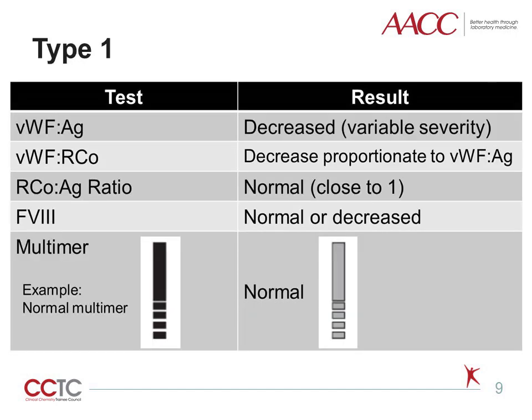Type 1 von Willebrand disease is the most common subtype, accounting for approximately 80% of the cases, and is characterized by a partial quantitative deficiency of von Willebrand factor. The bleeding symptoms are often mild, but can also be moderate or severe due to the genetic and phenotypic heterogeneity of the disease. In type 1, there is decreased von Willebrand factor protein, as measured by von Willebrand factor antigen, and decreased activity, as measured by von Willebrand factor ristocetin cofactor activity, due to the deficiency. Thus, the antigen amount and function are decreased proportionately, and factor VIII activity may also be low, which could result in a prolonged PTT. The multimeric test shows decreased intensity of staining, correlating with the deficiency, but all multimeric sizes are present.